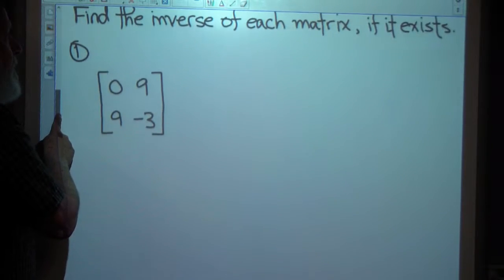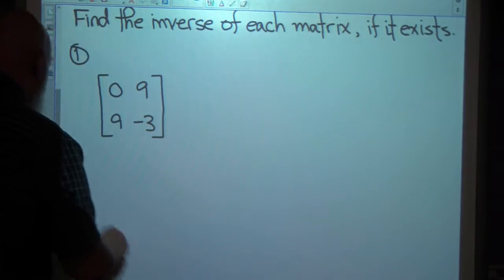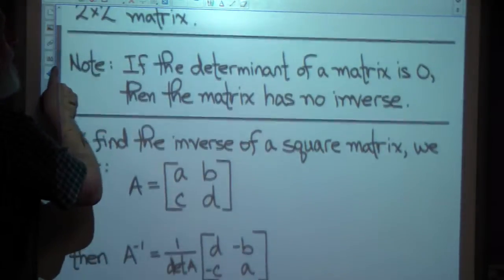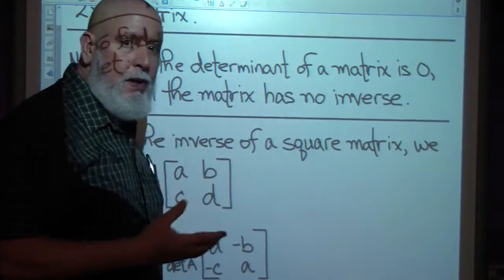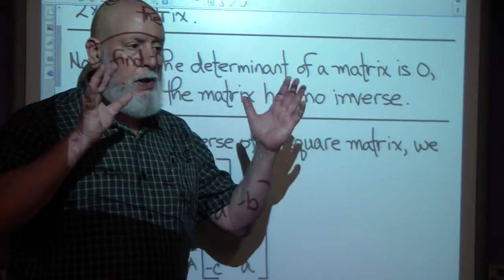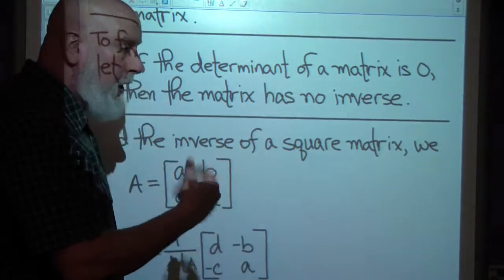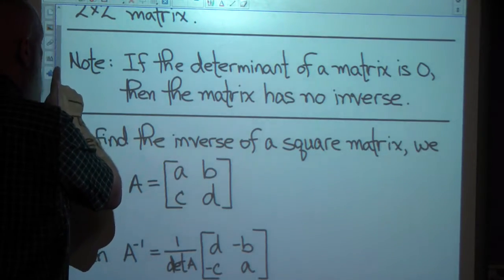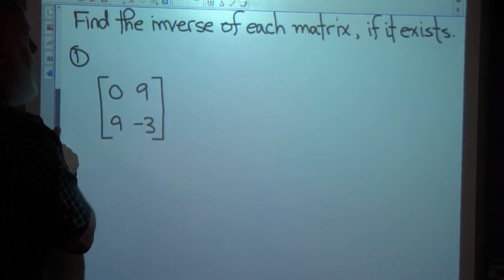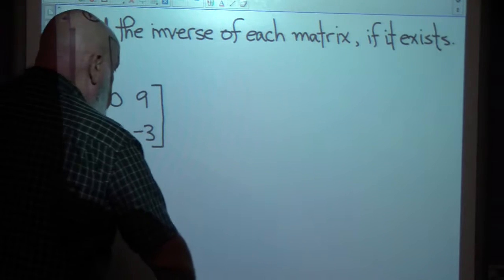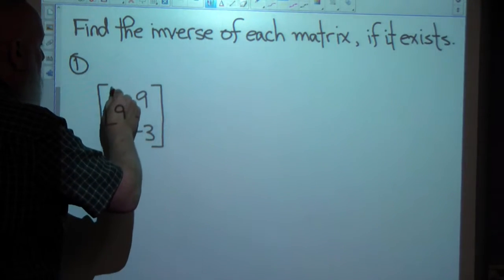Find the inverse of this matrix if it exists. Remember, it won't exist if the determinant of the matrix is 0. If I find the determinant to be 0, I'll stop and say there is no inverse — we call that singular. It's a singular matrix; it doesn't have an inverse.